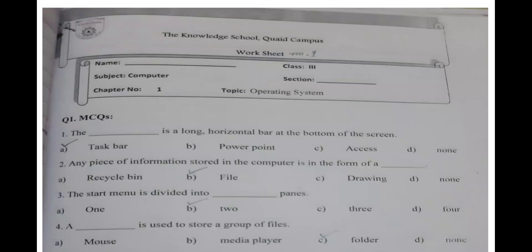The computer will save the data in file form. The start menu is divided into two panes - right pane and left pane. So this answer is B option, two.